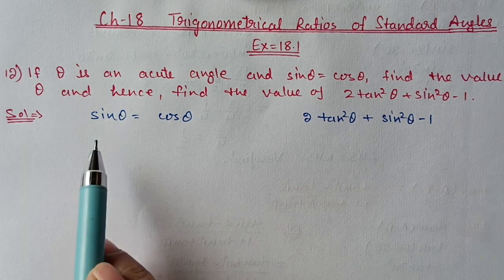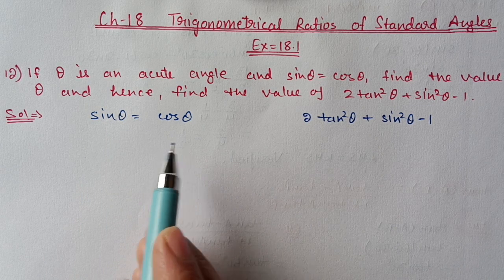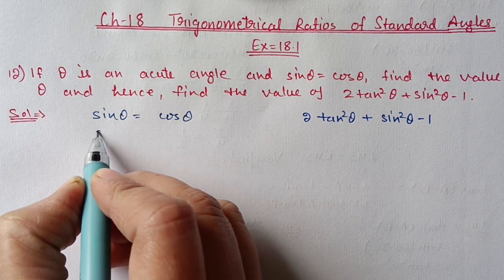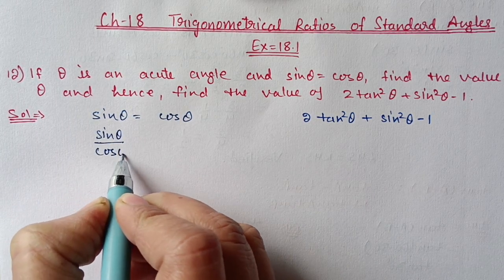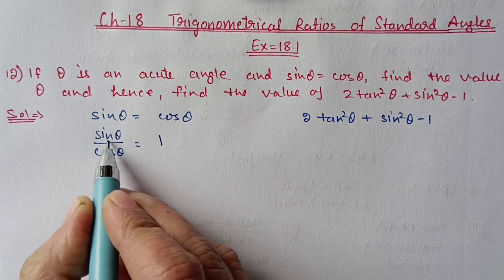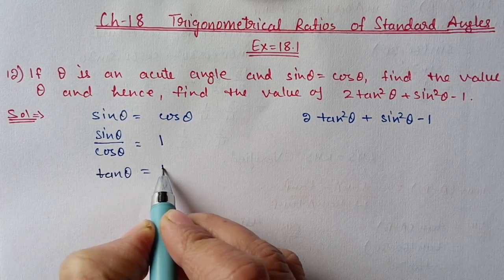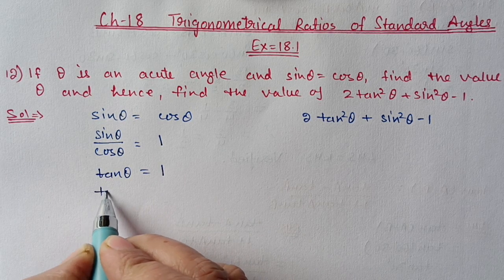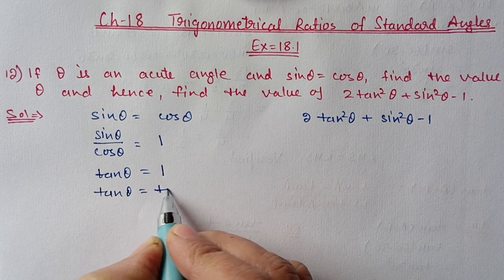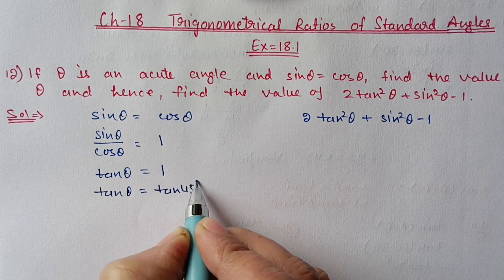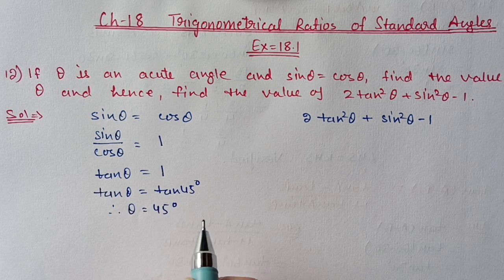First, with the help of sin theta equals cos theta, we will find out the theta value. If I shift cos theta to the other side, I get sin theta by cos theta is equal to 1. Since sin by cos is equal to tan, we have tan theta equal to 1. The value of 1 corresponds to tan 45 degrees, so tan theta equals tan 45 degrees, therefore theta equals 45 degrees.